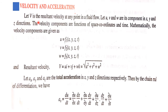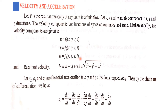Let V be the resultant velocity at any point in a fluid flow. Let u, v, and w be the velocity components in the x, y, and z directions. These velocity components u, v, and w are functions of space coordinates as well as time. Mathematically: u = f1(x, y, z, t), v = f2(x, y, z, t), and w = f3(x, y, z, t).